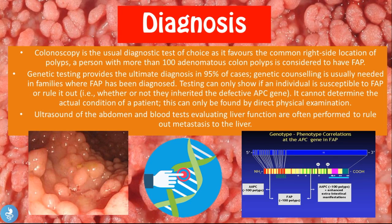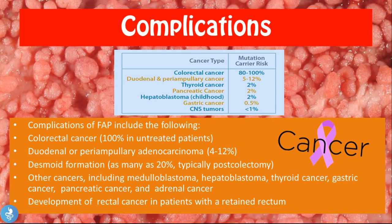An ultrasound of the abdomen and blood tests evaluating liver function are often performed to rule out metastasis to the liver. These patients are prone to colon cancer, and colon cancer frequently metastasizes to the liver, so a liver ultrasound can be very efficient in checking if the patient's liver is healthy and no cancerous cells are found there.